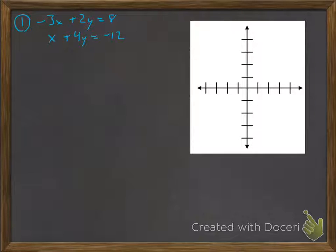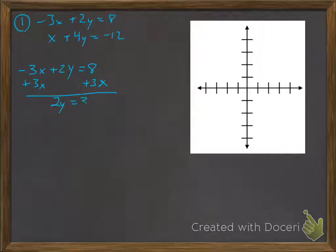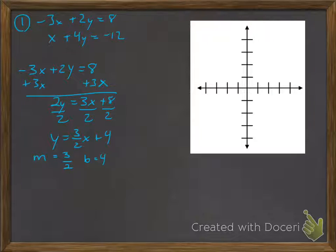So for the first example, I have two equations and what I'm going to do is I'm going to graph both of them. For this first one, I have to add 3x because I'm trying to solve for y. I'm putting it in slope-intercept form, divide by 2. Y is equal to 3 over 2x plus 4. So my m is 3 over 2, my b is positive 4.